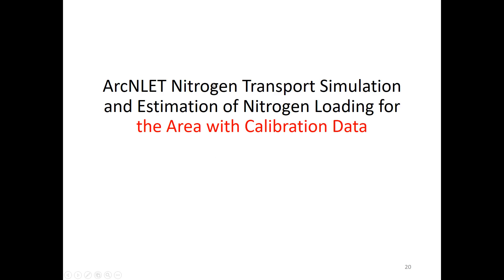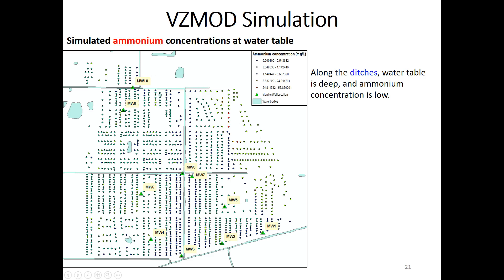After calibration, we used the calibrated model to estimate nitrogen load for the calibration area — a smaller region with a subset of the septic tanks. This is the simulated ammonia concentration at the water table beneath the drain field of each septic tank from WISMOD. Along the main canal, ammonia concentration is actually lower because the water table there is deep — the water table elevation decreases toward the canal.